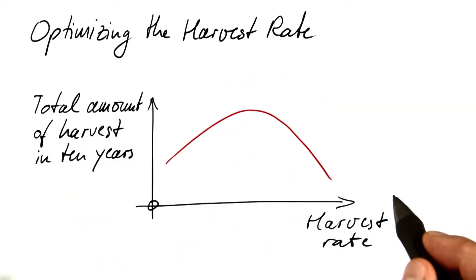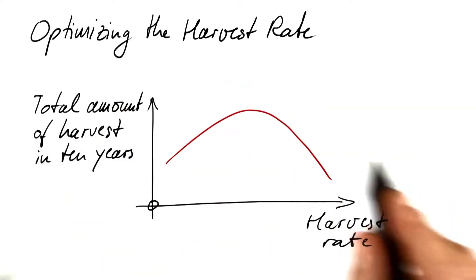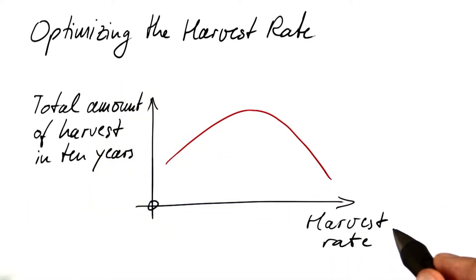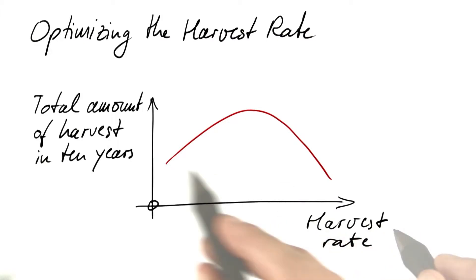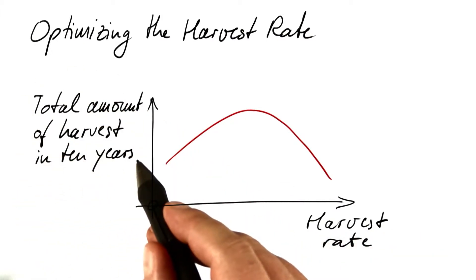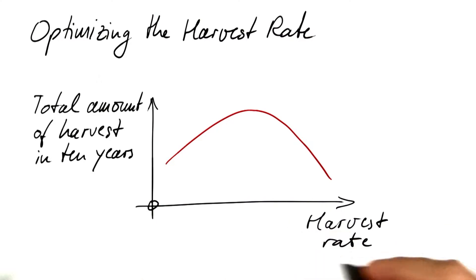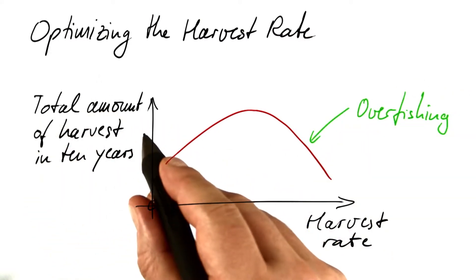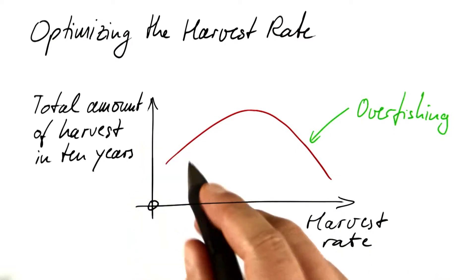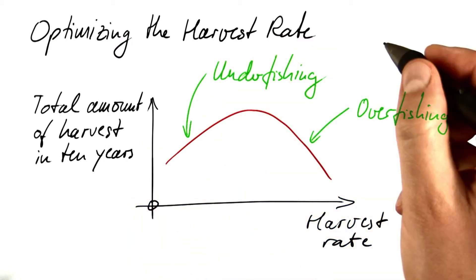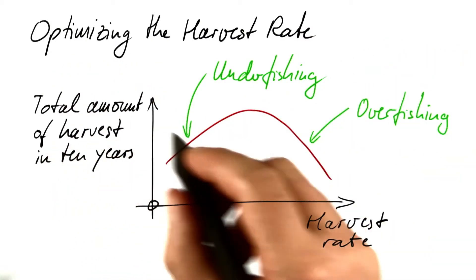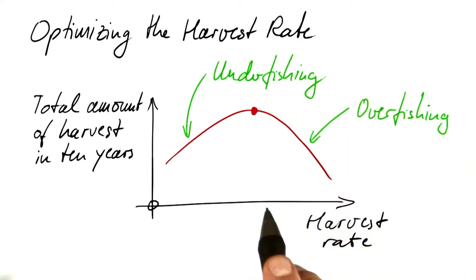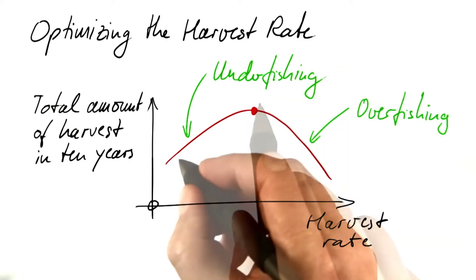Now let's return to fishing, but look at it from a different perspective — the perspective of optimization. We could run our simulation with different but constant harvest rates and check what the total amount of harvest in 10 years would be. If we are using too high a harvest rate, we are overfishing and hence lose from the total amount that would be possible. If we harvest too little, we are underfishing, which also is not optimal. Optimization aims at finding the right value for the harvest rate — the value that would maximize the total amount of harvest.